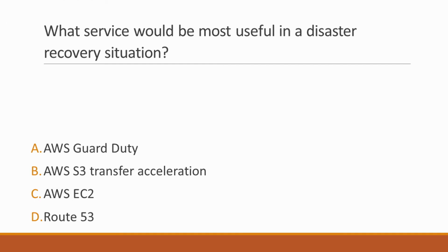Next question: What service would be most useful in a disaster recovery situation? Options: A. AWS GuardDuty, B. AWS S3 Transfer Acceleration, C. AWS EC2, D. Route 53. Correct answer is option D, Route 53, because when you have more than one resource performing the same function, you can configure Amazon Route 53 to check the health of your resources and respond to DNS queries using only the healthy resources.